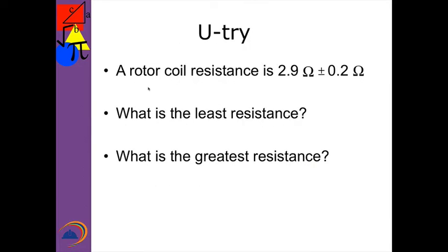So now here's a U-try. A rotor coil resistance is 2.9 ohms plus or minus 0.2 ohms. Find out what the least resistance is and what the greatest resistance is. Teacher, pause the video, have the students work the problem, compare with their partners, and call on non-volunteers.